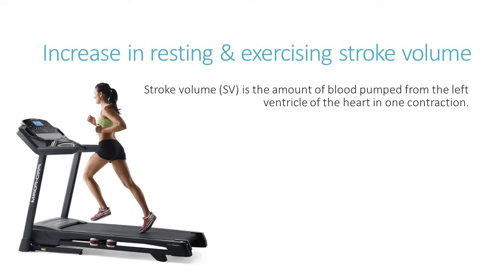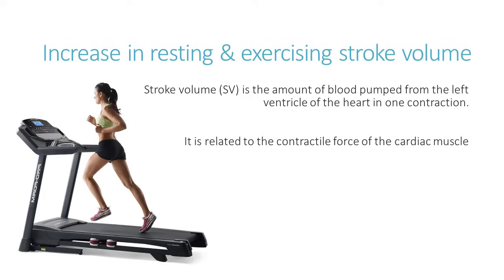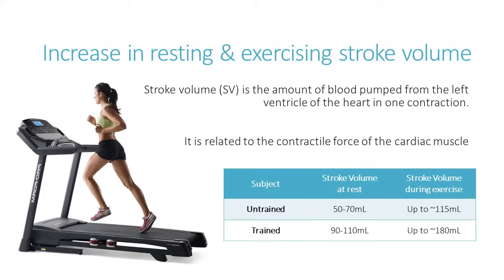The next chronic adaptation — a long-term change as a result of exercise — is that we increase the resting and exercising stroke volume. The stroke volume is the amount of blood pumped from the left ventricle of the heart in a single contraction, on its way to the body, to the working tissues and muscles. Stroke volume is directly related to the contractile force — the strength of contraction of the cardiac muscle, which we've just discussed.